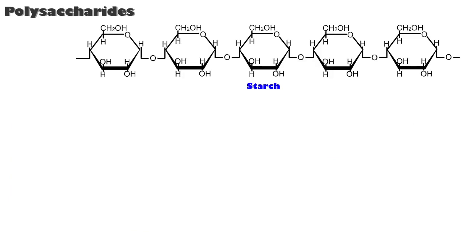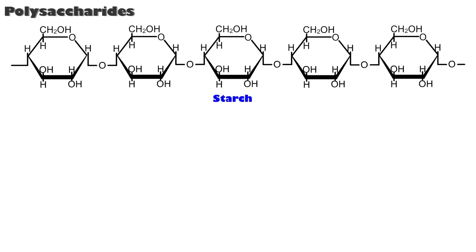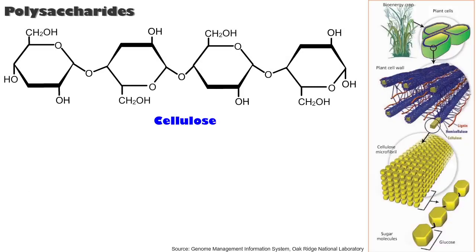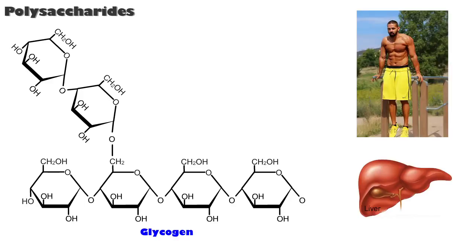Polysaccharides include starch, cellulose, and glycogen. These long, chain-like polymers make ideal storage products due to their insolubility. Starch is the storage molecule synthesized from glucose by plants. Cellulose, which is also synthesized by plants for cell wall construction, is indigestible because we lack enzymes for it. Cellulose provides fiber to promote peristalsis. Glycogen is the carbohydrate storage molecule found in muscle and liver cells. When blood sugar drops, liver cells hydrolyze glycogen and release glucose to the blood.